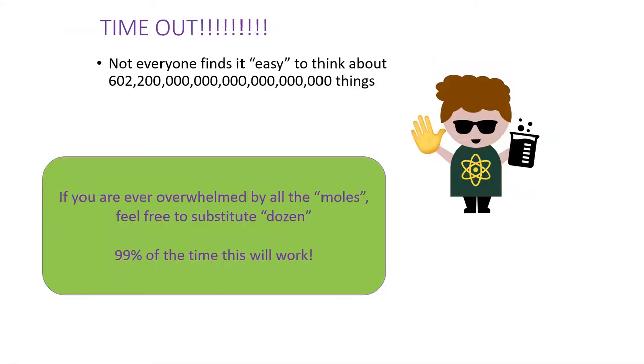But I'd like to pause and recognize that our tiny human brains have a notorious difficulty working with large numbers like 602 billion trillion. If you're ever feeling overwhelmed by using the word mole in a sentence, you can just substitute the more familiar word dozen. It's much easier to think about things in dozens.